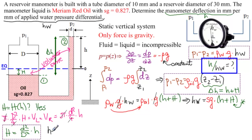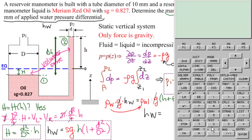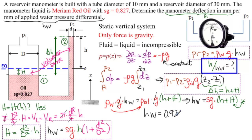So we have hw equals SG times - let's factor out h - so we have 1 from this h here and little d squared over big D squared from there. We know SG is 0.827. We know little d is 10 millimeters and big D is 30 millimeters. So let's get our calculator and calculate that. We have hw equals 0.827 times parenthesis 1 plus 10 squared divided by 30 squared, parenthesis. So this is 0.92 times h.